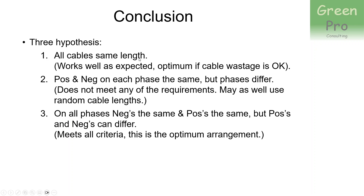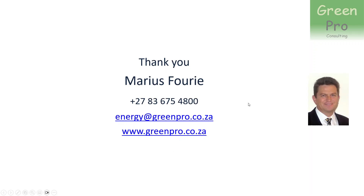In conclusion: all cables the same length works well as expected, but may waste cable and increase losses. Positive and negative the same per phase but phases differing meets none of the requirements - it's a no-no method. All negatives the same and all positives the same across phases, even if positives and negatives differ from each other, meets all criteria and in most cases will be your optimum arrangement. Thank you very much, and if you have any questions, feel free to contact me.